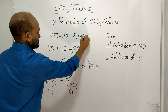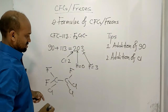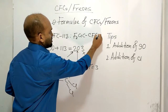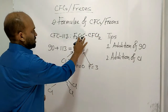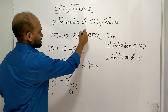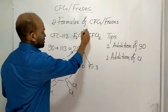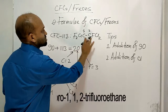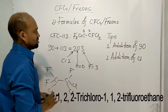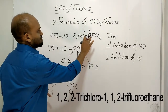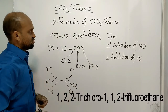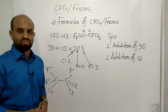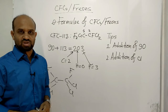The name of CFC-113 is 1,2-dichloro-1,1,2-trifluoroethane, where carbon one carries two fluorine and one chlorine, and carbon two carries one fluorine and two chlorine atoms.